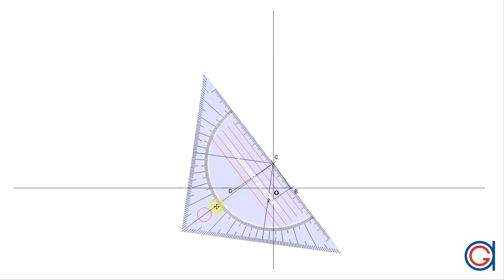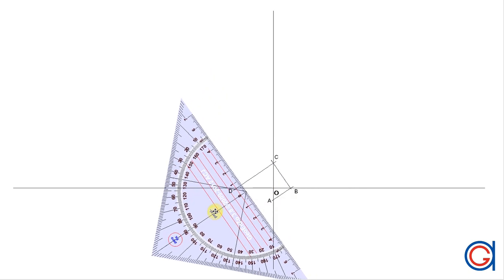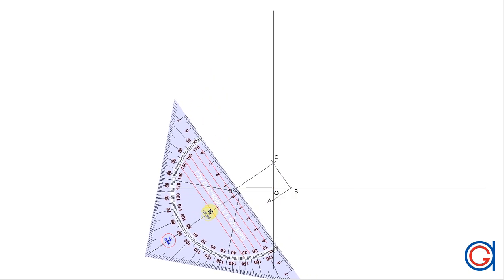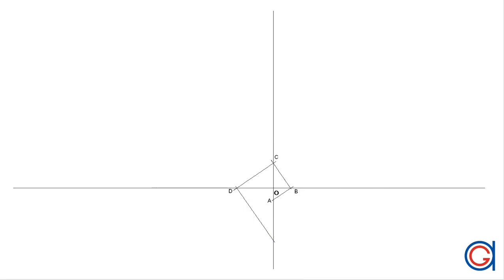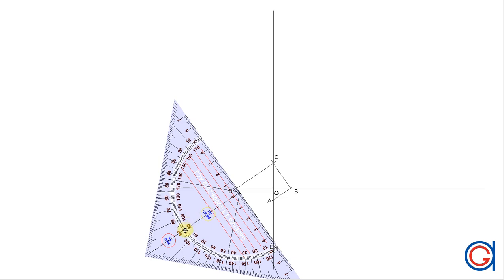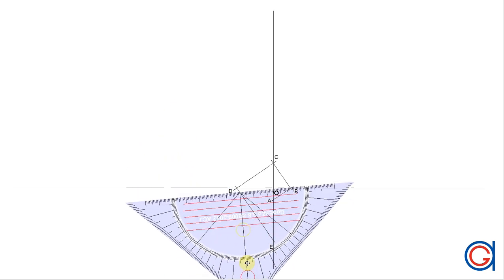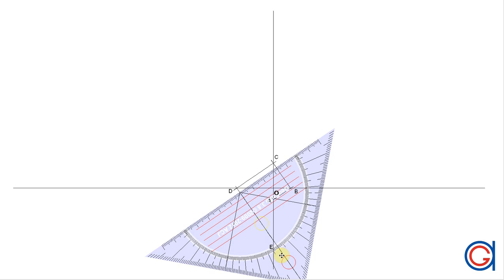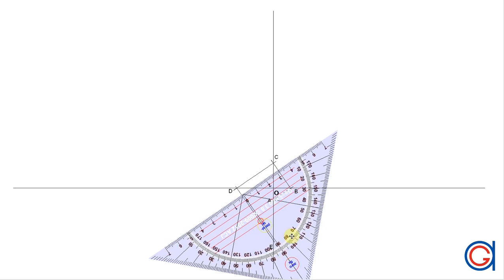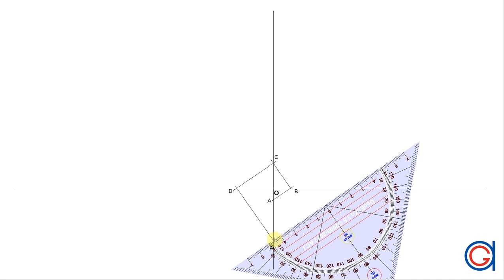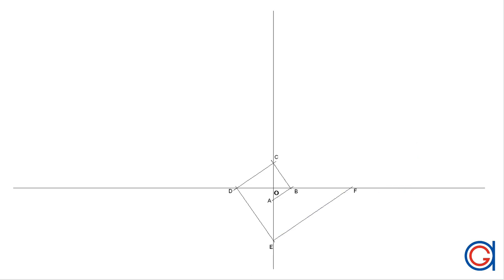Now we draw a perpendicular line segment from point D along CD until it cuts our vertical axis again at a new point E. We are going to continue this process, drawing a perpendicular line from point E until it cuts our vertical axis at a new point F, as can be seen here.